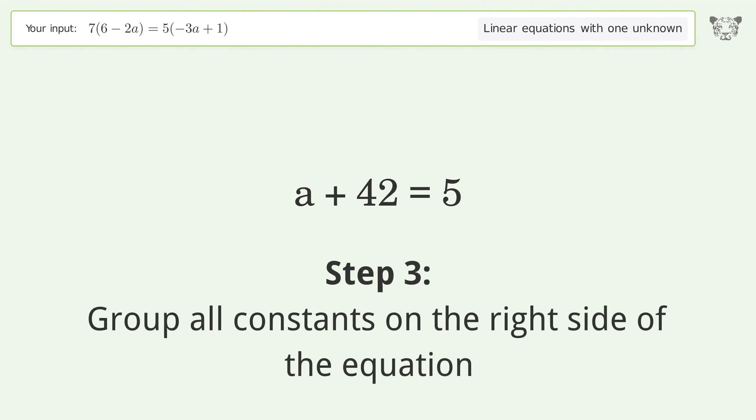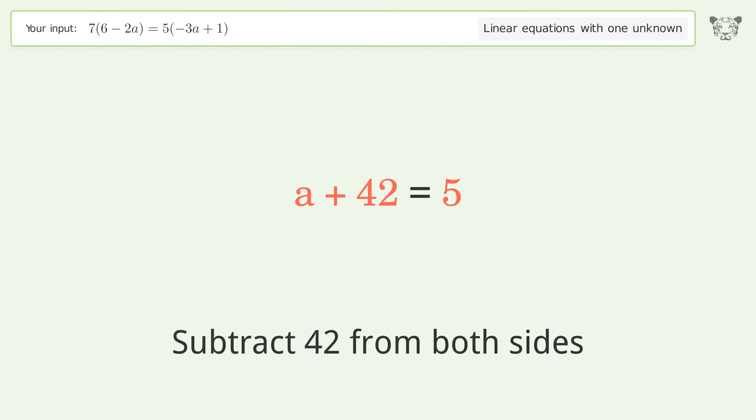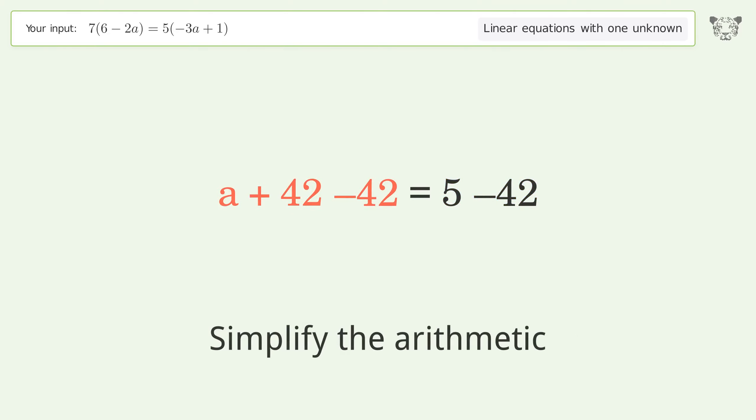Group all constants on the right side of the equation. Subtract 42 from both sides. Simplify the arithmetic.